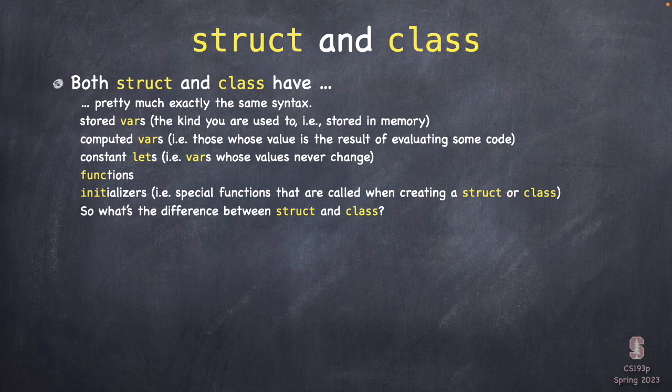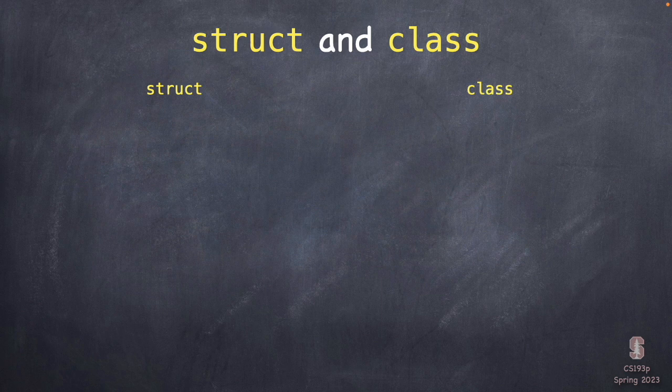So what's the difference between struct and class? They have all these things exactly the same — what's different? This is really important to understand, especially since most of you are coming from object-oriented programming and are used to classes. You're going to be doing 99.9% structs in this class. The only thing we'll use a class for is the view model — that gatekeeper. Everything else will be a struct.